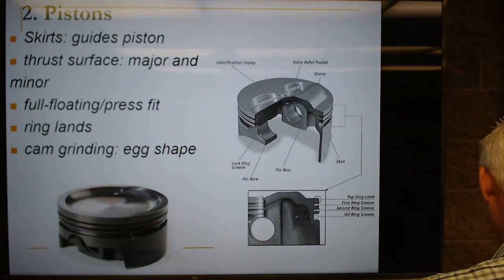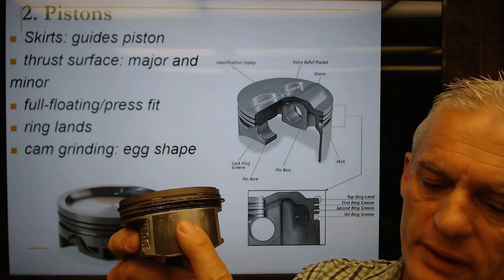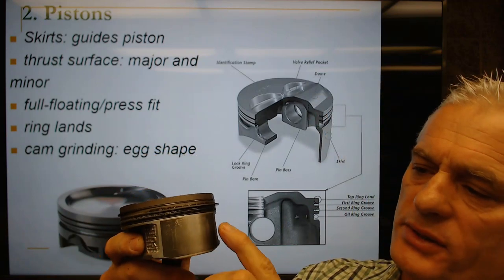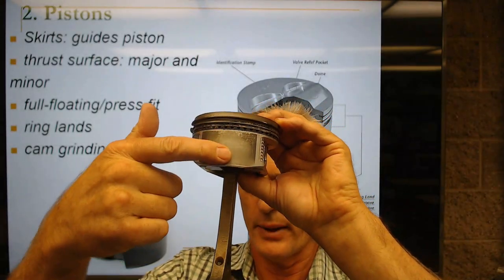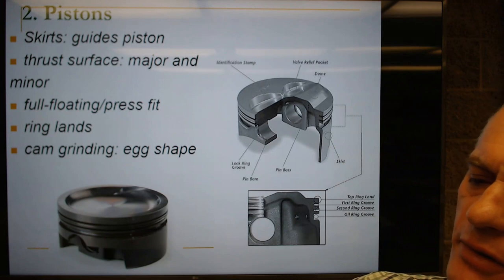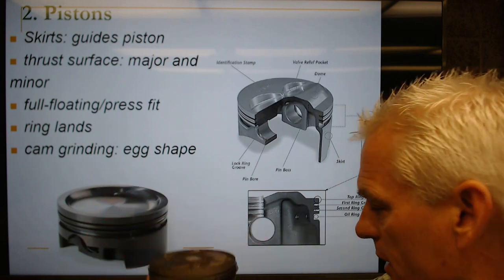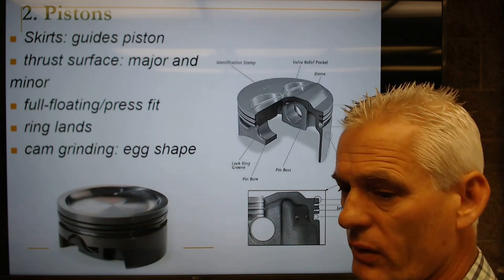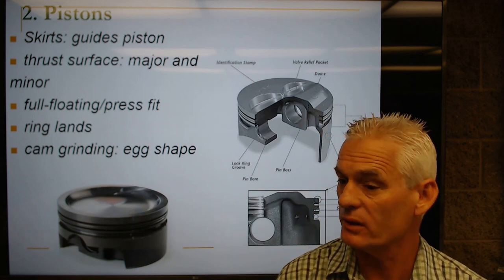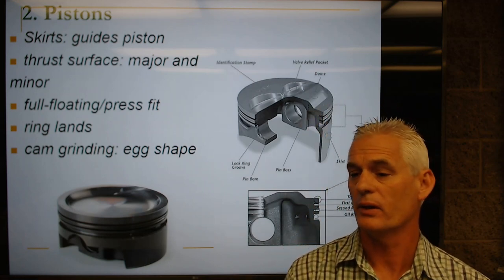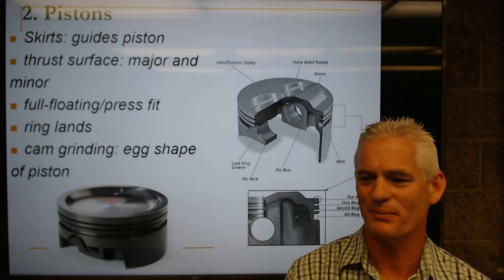On this worn Lexus piston you can see where the molybdenum disulfide coating has worn off and you can feel a little bit of grooving from the old oil on the cylinder wall. We don't want that piston to actually touch the cylinder wall — we want it to slide up and down on a lubricating film of oil.